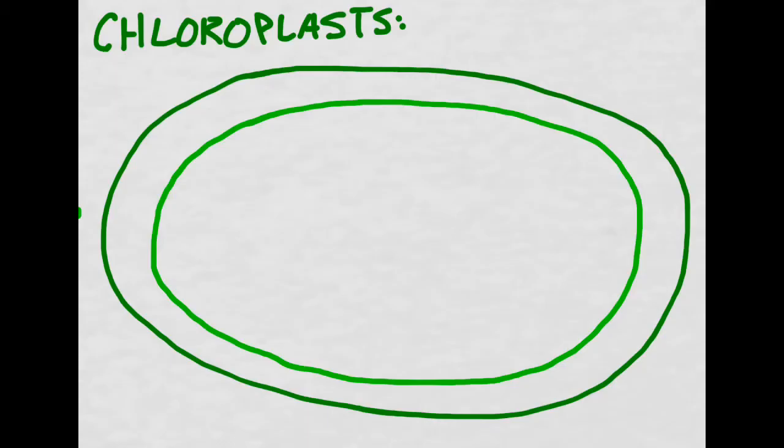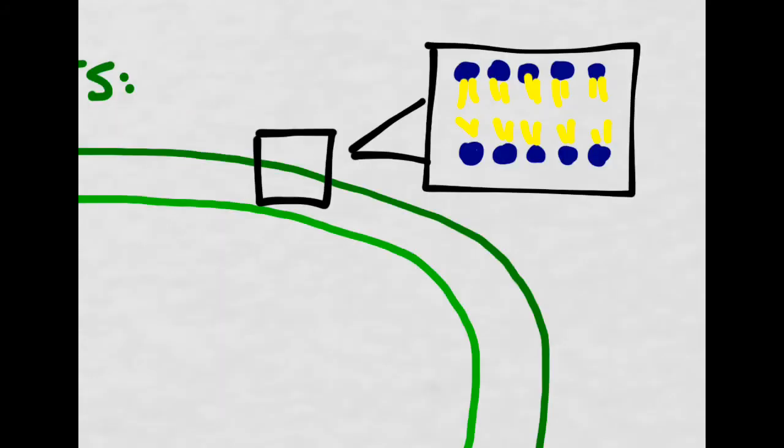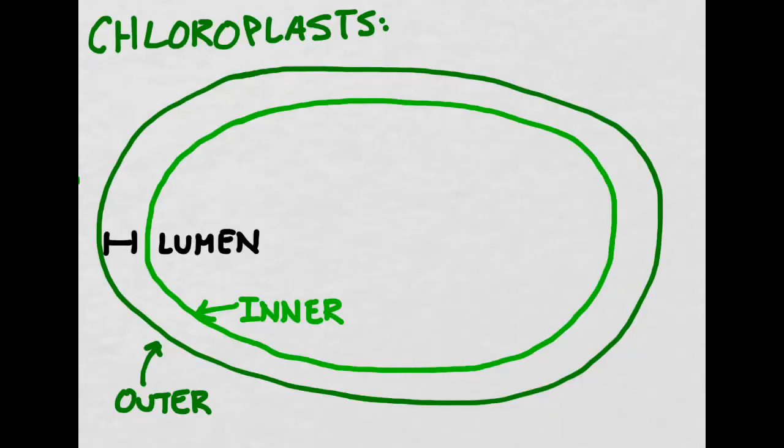Chloroplasts are surrounded by two membranes. If we were to zoom in on these two membranes, they would look just like our old friend, the phospholipid bilayer. A chloroplast has two layers of membranes, one on the outside and one on the inside. The two membranes surrounding chloroplasts are called the outer and inner membranes, and the space in between them is called the lumen.